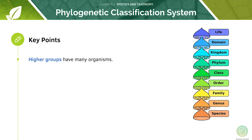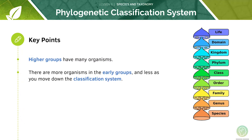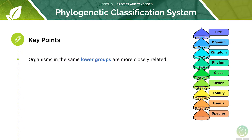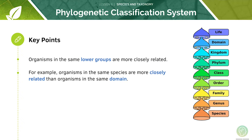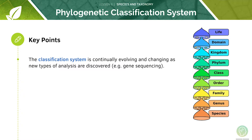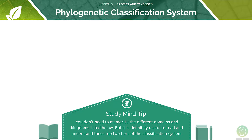The higher groups will have many organisms, and there are more organisms in the early groups. Organisms lower down are more closely related. For example, different types of humans are in the same species, whereas a human and a chimpanzee may be in the same domain. Naturally, two humans are more similar to each other than a human and a goat. The system is continuously updating. You don't need to know all the domains listed, but you should know the top two tiers of the classification system reasonably well.